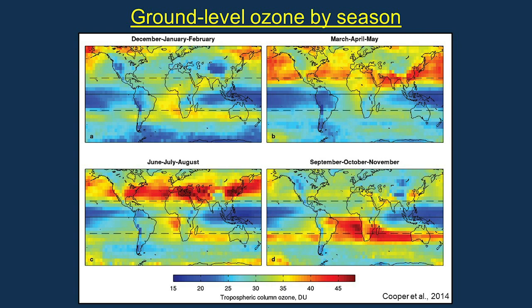Ground level ozone is created as a result of pollution in heavily populated industrialized regions. When more ultraviolet B radiation reaches Earth's surface, it dissociates more ground level ozone, warming the air. This explains why global warming was observed to be greatest in heavily industrialized regions, and why global warming was twice as great in the northern hemisphere, containing 89% of the world population.